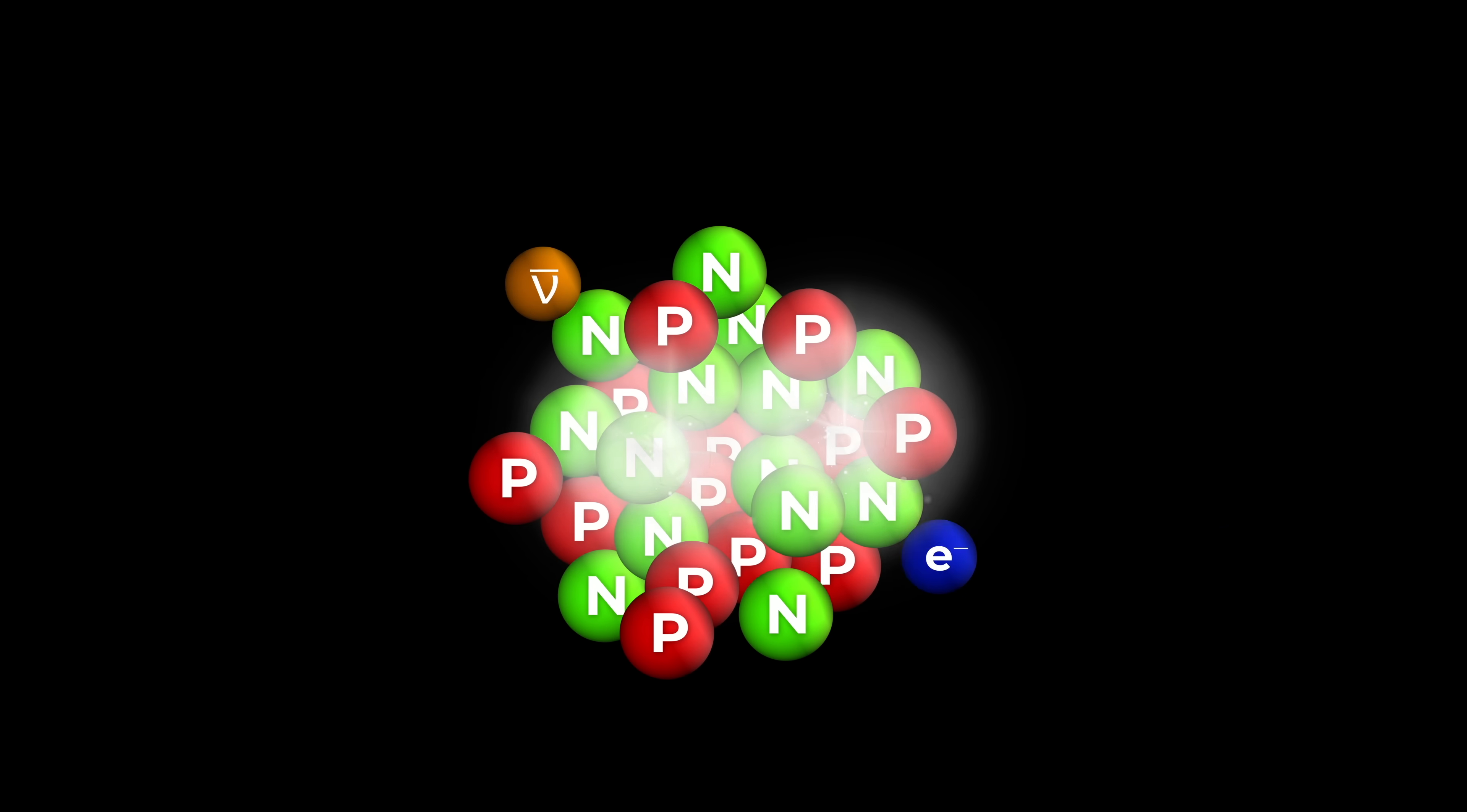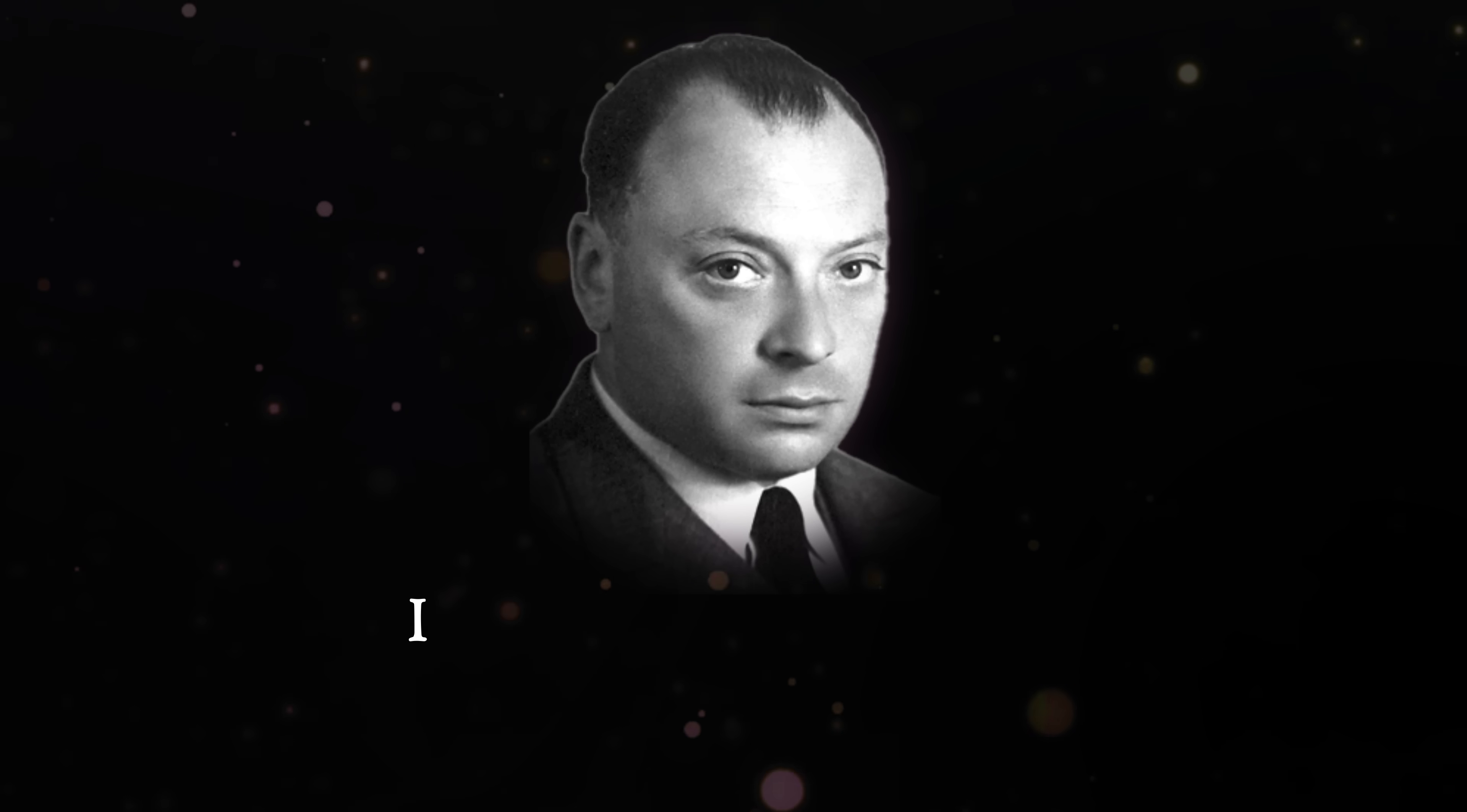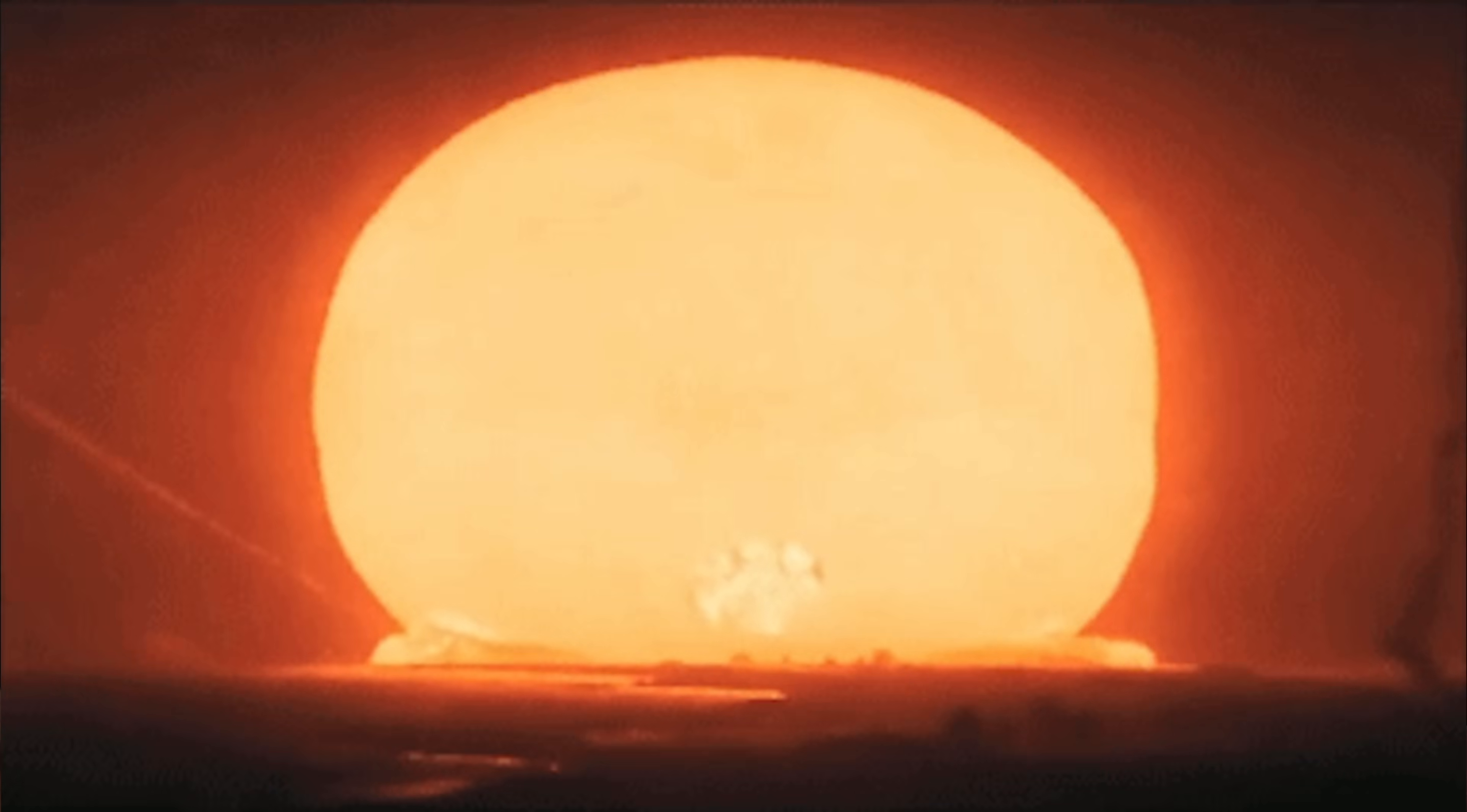His desperate remedy was to propose the existence of a counter particle, one that would offset the changes in energy and motion that he observed. Unfortunately, as Pauli put it, one should have seen these earlier if they really existed. He famously said, I have done a terrible thing. I have postulated a particle that cannot be detected.